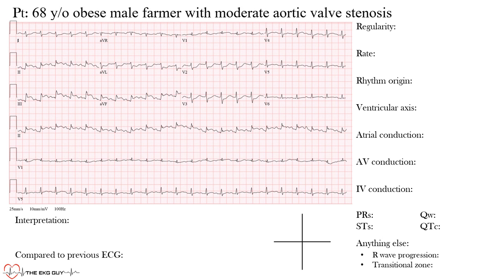So let's walk through this patient's presentation: a 68-year-old obese male farmer from Minnesota with moderate aortic valve stenosis. We normally start with regularity — we want to find waves or intervals that are consistent throughout to call it a regular rhythm. Some of the best leads to look at are the rhythm strips at the bottom.